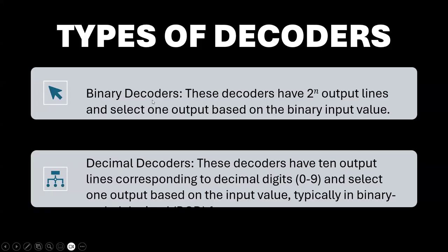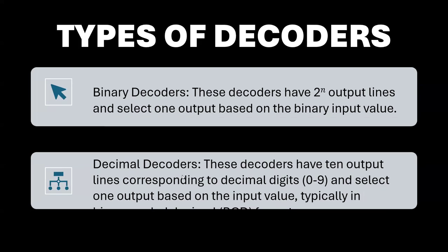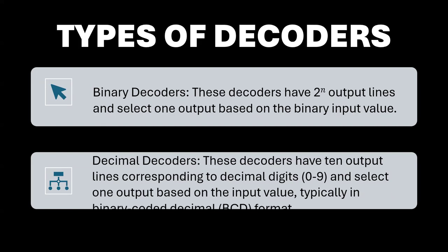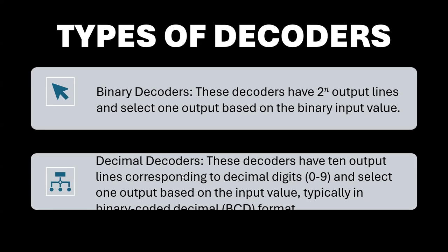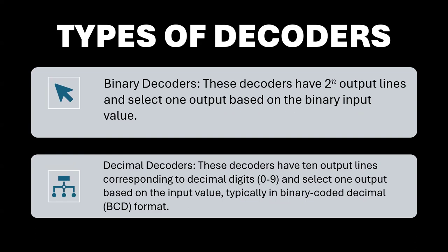There are two types of decoders. Binary decoders have just two signals - high and low. Decimal decoders have 10 outputs representing 0 to 9, corresponding to the decimal number system, in binary coded decimal (BCD) format.